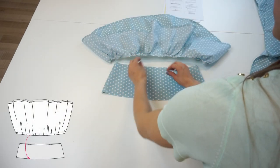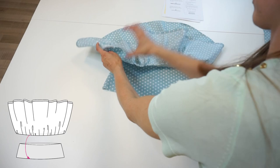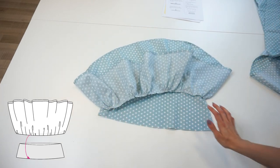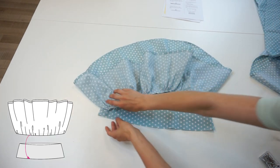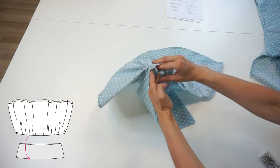Put the first skirt panel inside the first frill panel with right sides facing. Pin the gathered edge to the first panel's lower edge.